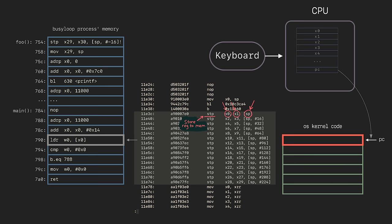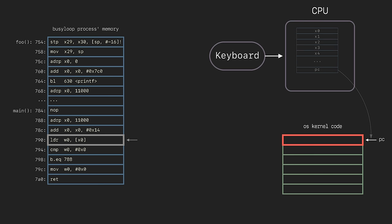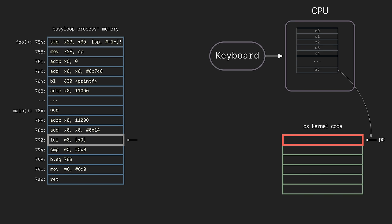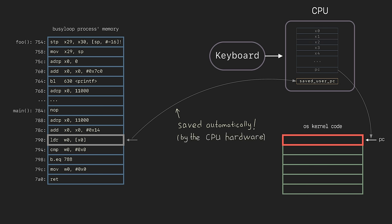The exception here is the program counter. When the interrupt arrives, the execution immediately jumps to the kernel code, which means that the program counter is already pointing to that kernel code. Didn't we lose the user space program counter? Yes — the hardware knows about that problem. During the jump to the kernel, the CPU automatically saves the user space program counter to a separate register, so we don't lose it.